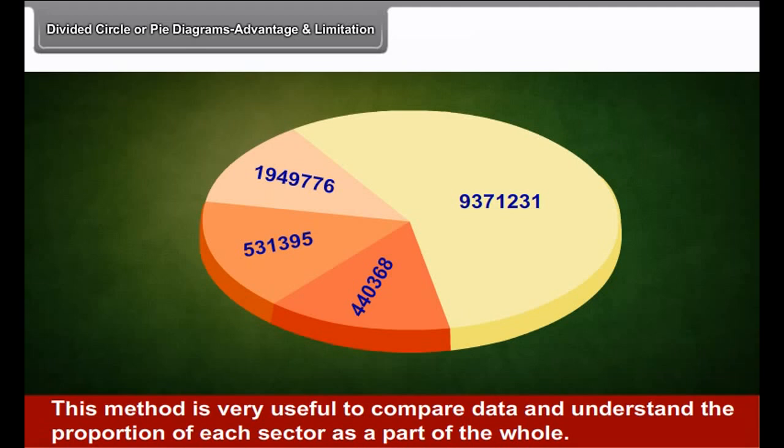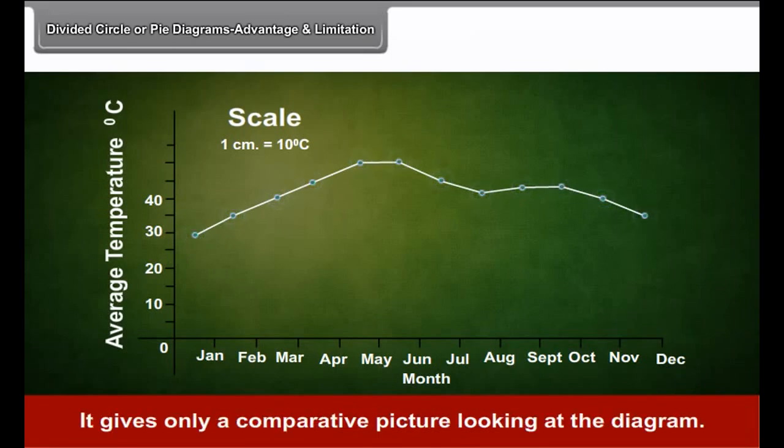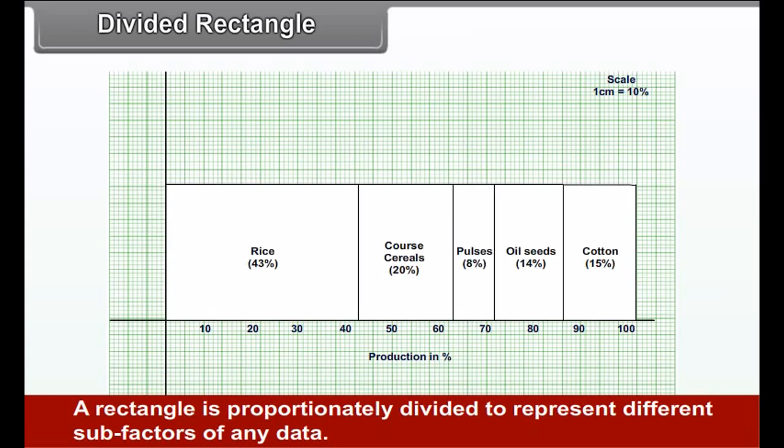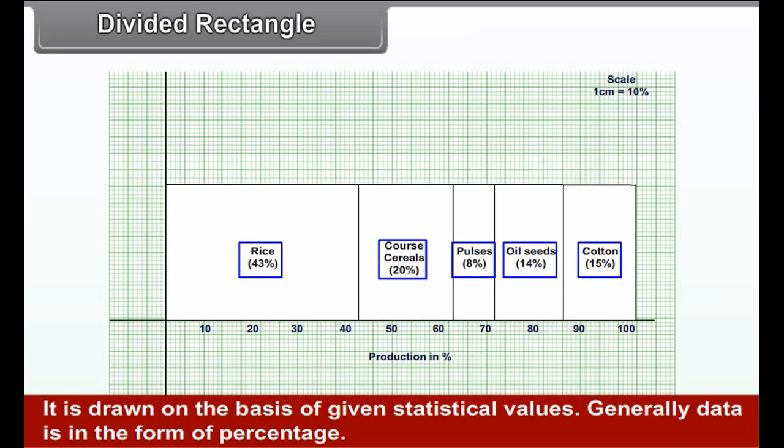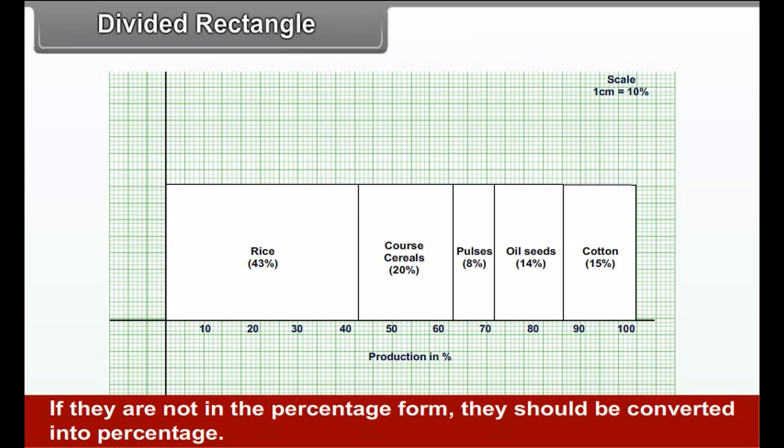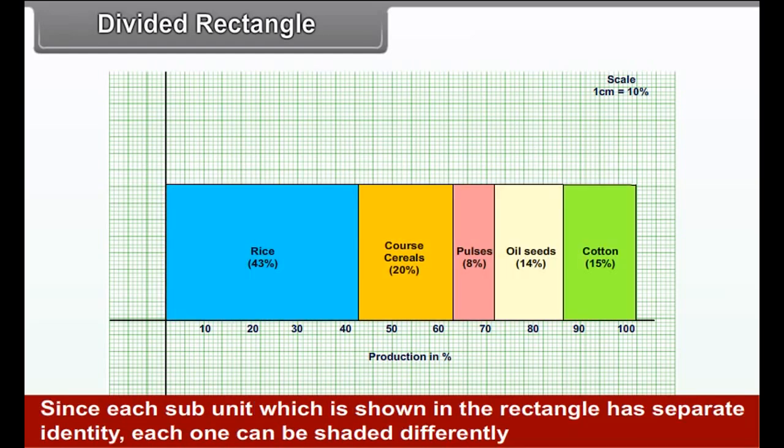Exercise 4: Vehicle sale in India 2009-2010. Types of vehicles, Number of vehicles, Degree: Passenger vehicles 1,94,94,776, 57 degrees. Commercial vehicles 53,53,395, 16 degrees. 3 wheelers 44,44,368, 13 degrees. 2 wheelers 9,37,231, 274 degrees. Total 12,29,272,770, 360 degrees.